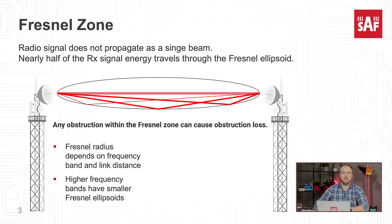Before we start with actual line of sight verification, let's first look at the Fresnel Zone theory, which explains how radio signals travel between two points — in our case between two microwave point-to-point antennas used for a communication network. Radio signal does not propagate in a single beam. Nearly half of the received signal energy travels through the Fresnel Ellipsoid. Any obstructions within the Fresnel Zone can cause obstruction loss, resulting in decreased signal levels and worse signal quality, which can affect the data throughput of a microwave point-to-point link. Fresnel zone radius depends on frequency band and link distance — at lower frequency the Fresnel Zone is wider, but for higher frequency bands the Fresnel Zone Ellipsoid radius is smaller for the same link distance.